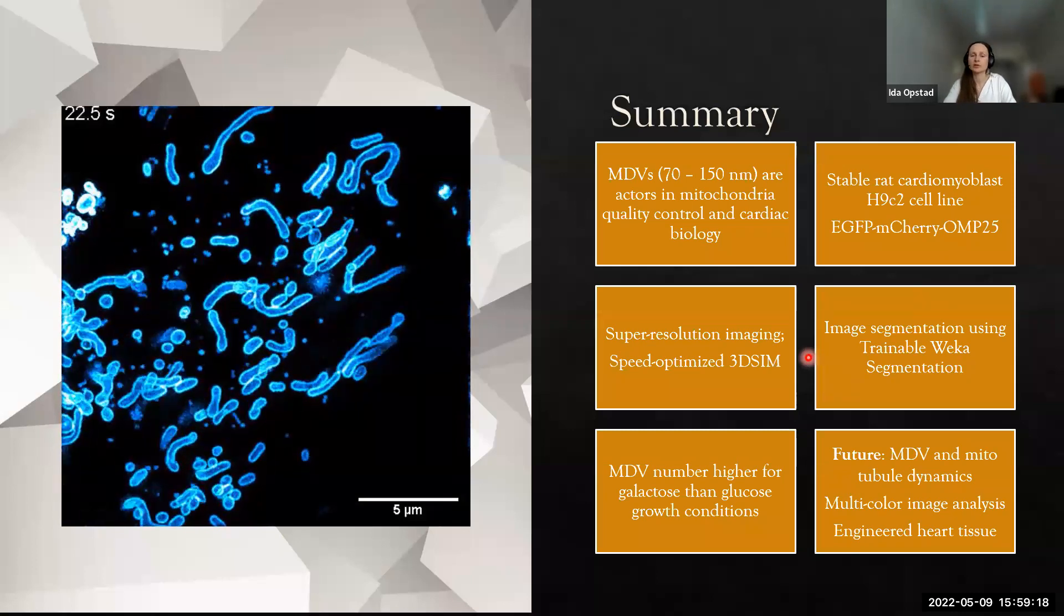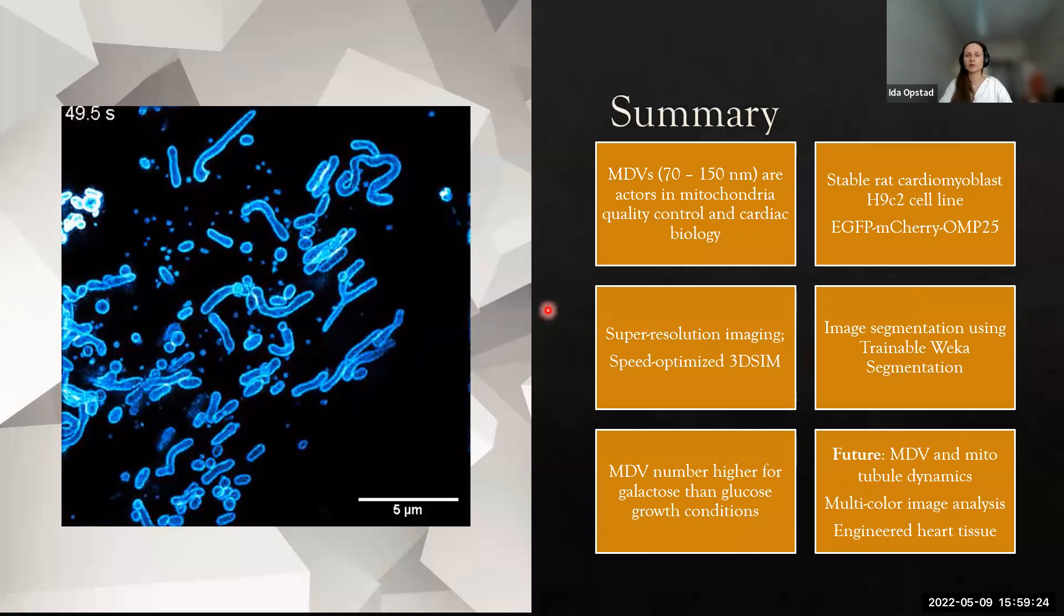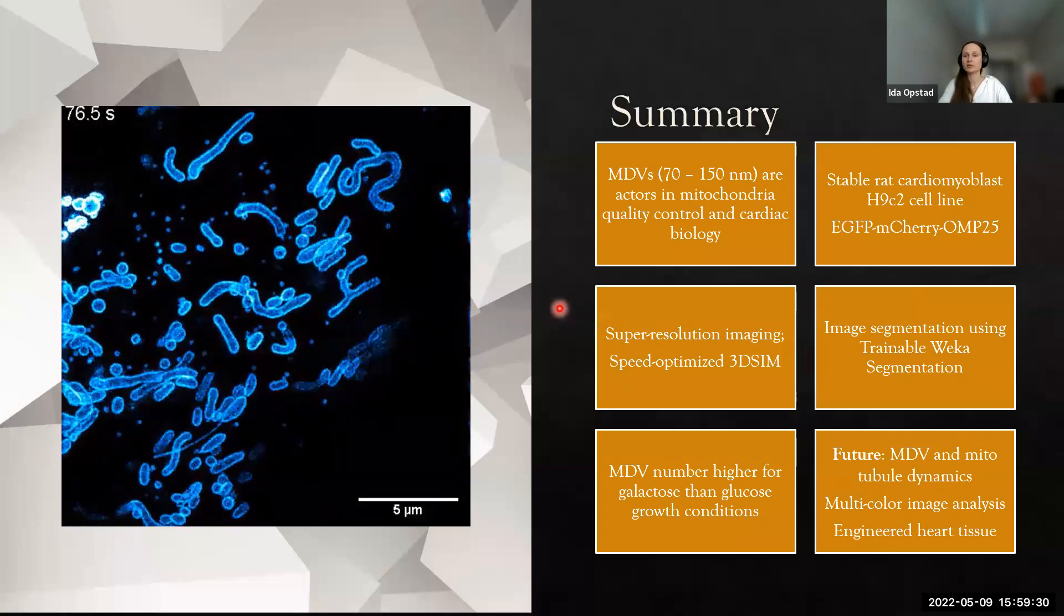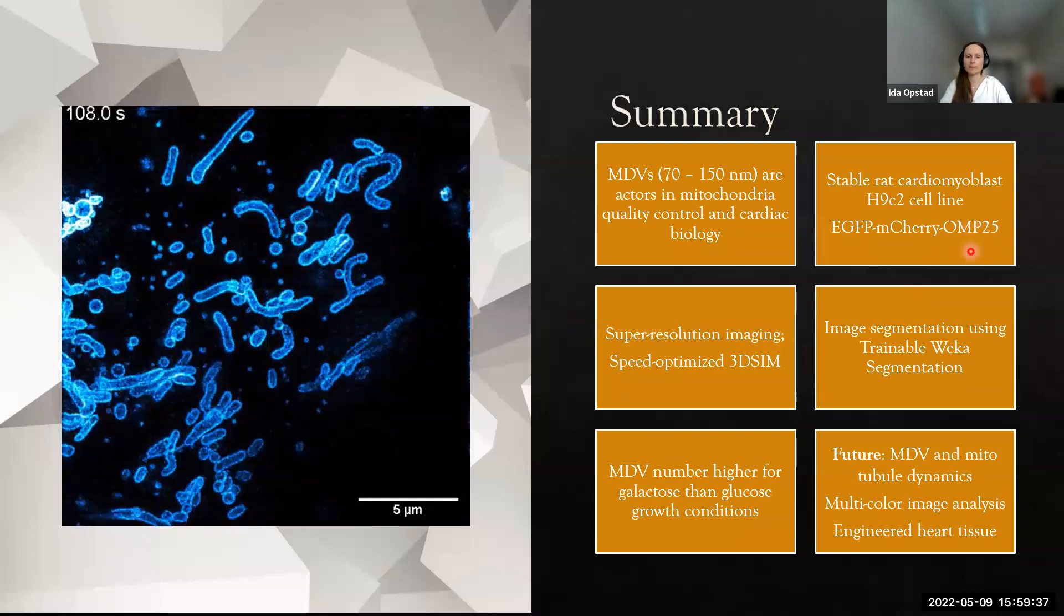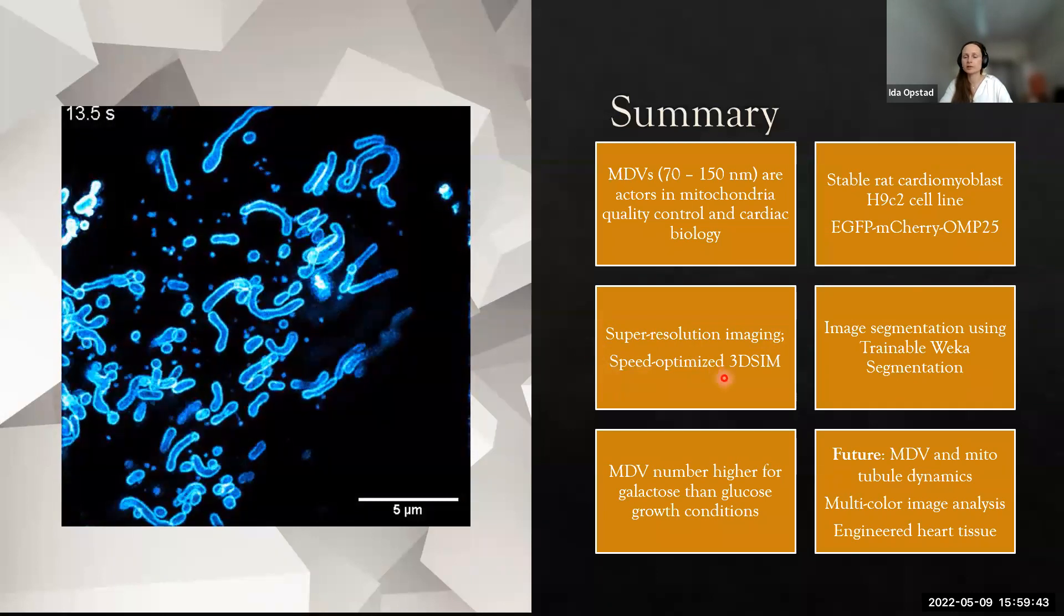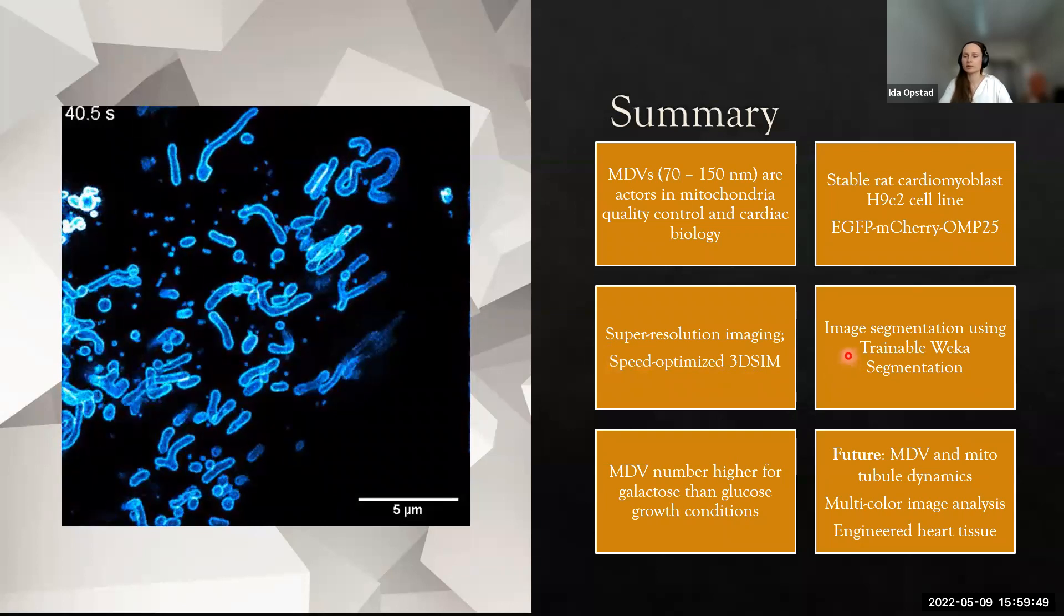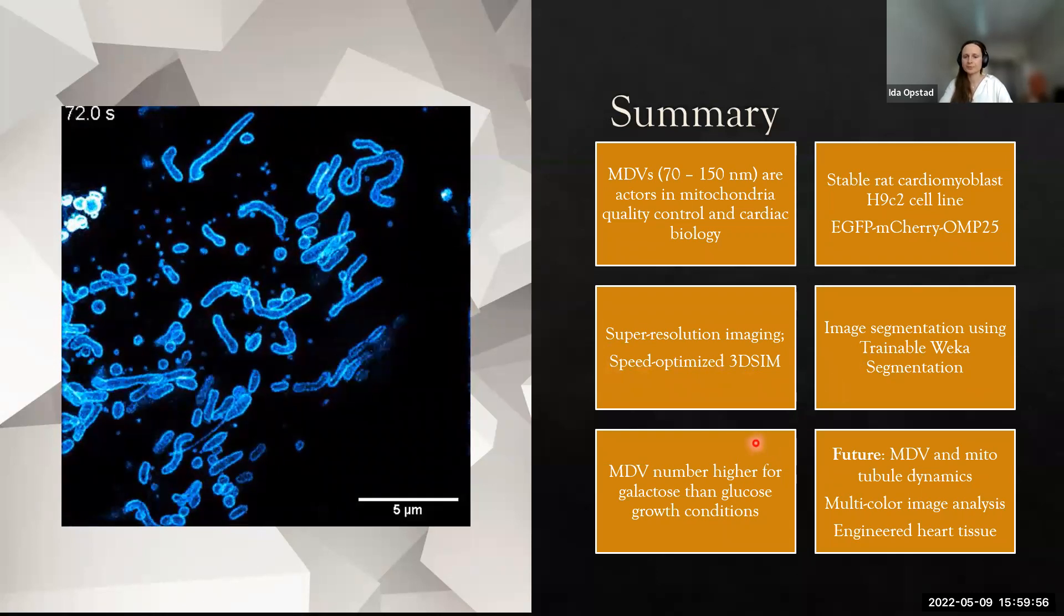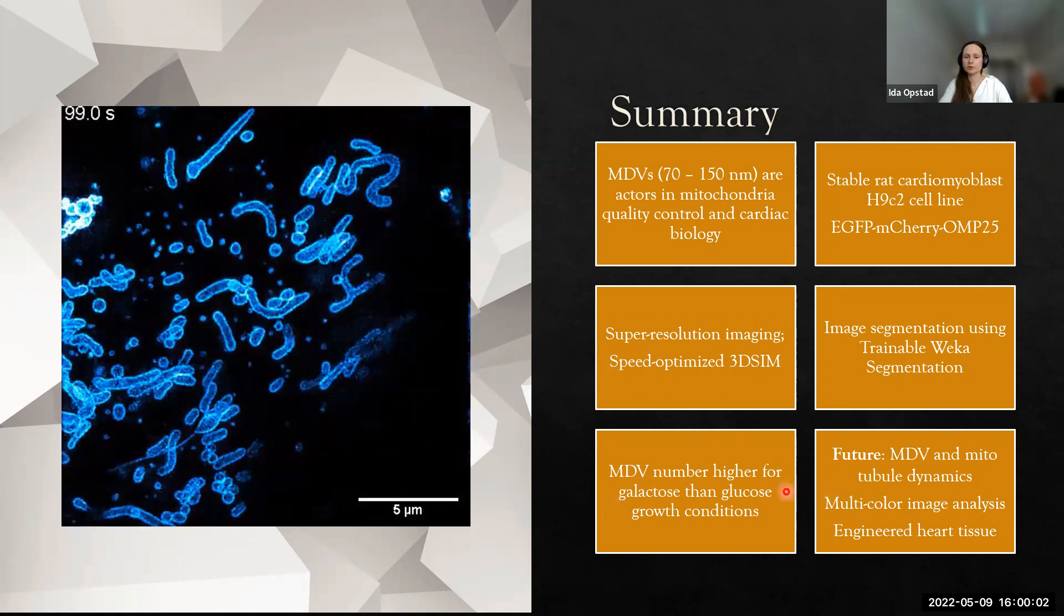To summarize, mitochondria-derived vesicles are tiny vesicles and they are actors in mitochondria quality control and cardiac biology. We used a stably transfected cardiomyoblast cell line with a double tag on the outer mitochondrial membrane. We talked about and applied super-resolution imaging and speed-optimized 3D SIM. I showed you how the vesicles can be quantified using Trainable Weka Segmentation to also get rid of the artifacts in the images. We found a higher number of vesicles for galactose than for glucose growth conditions.